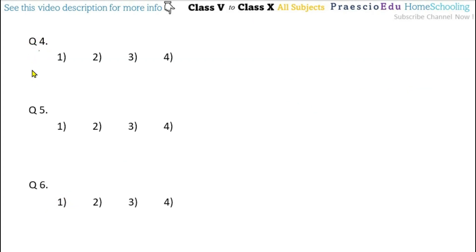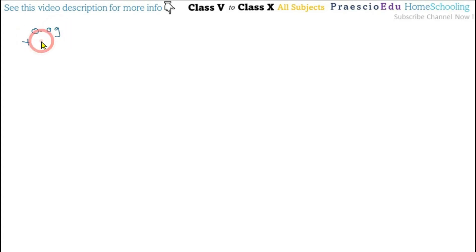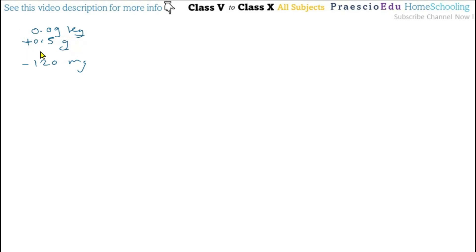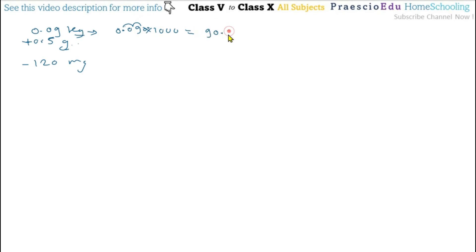Question number 4: 0.09 kg plus 0.5 gram minus 120 milligrams. Here we have kg and grams, so we cannot directly add — we must first convert 0.09 kg to grams. As we know, 1 kg equals 1000 grams, so 0.09 multiplied by 1000 — the decimal shifts 3 places — gives 90.0 grams.